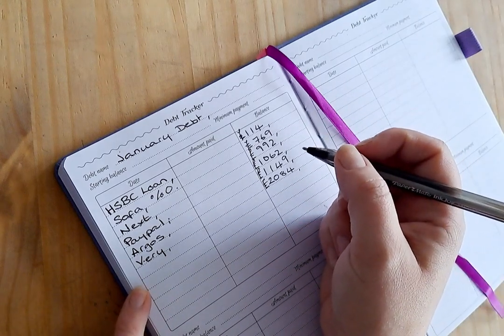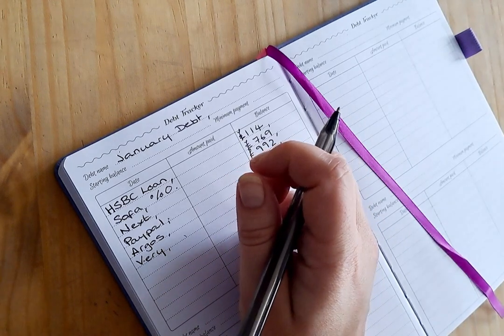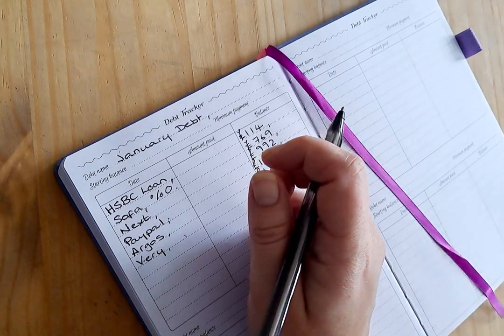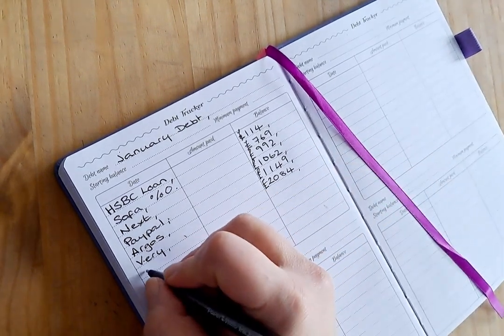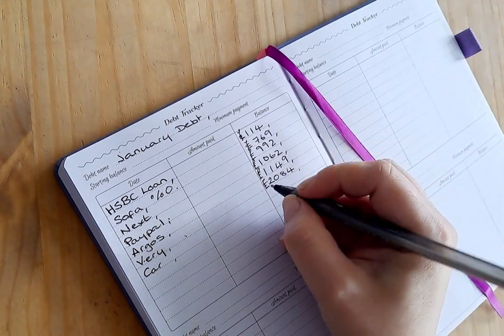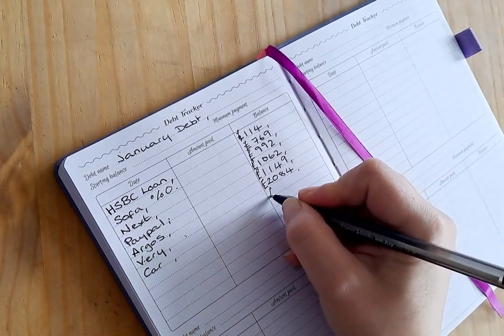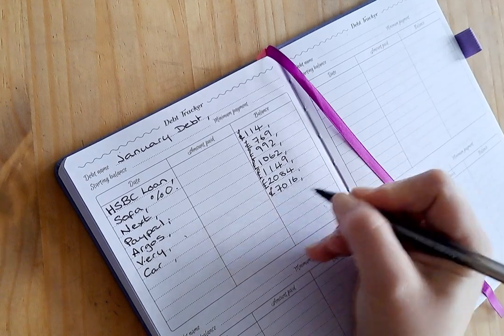After Very, these are all mine by the way, we have our car repayments and the balance of that one at the end of January was £7,016.